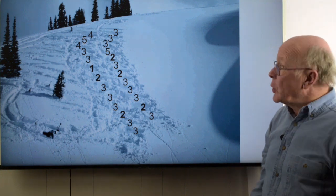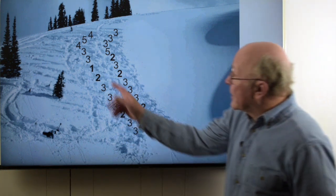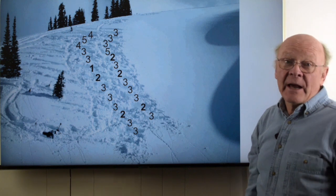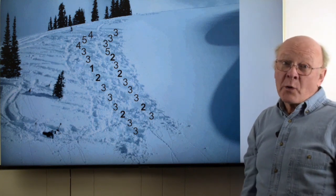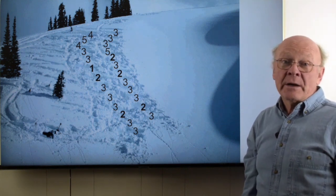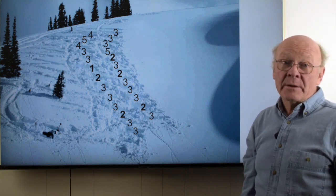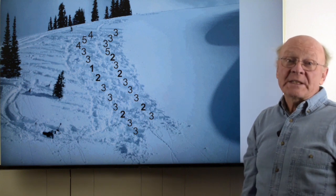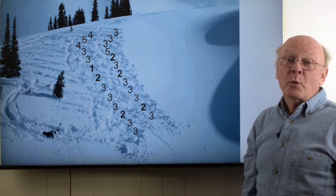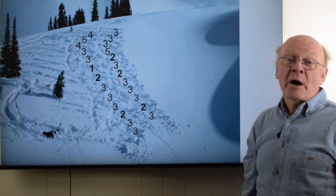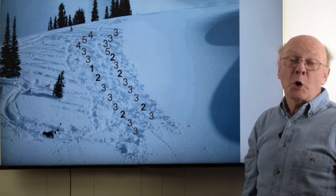Near the top of the slope, where my colleague and I got two fours and a five — which are more indicative of stability — the surface hoar layer could not be found. While doing these tests, we suspected that wind inhibited the growth of surface hoar crystals high on the convex part of the slope.